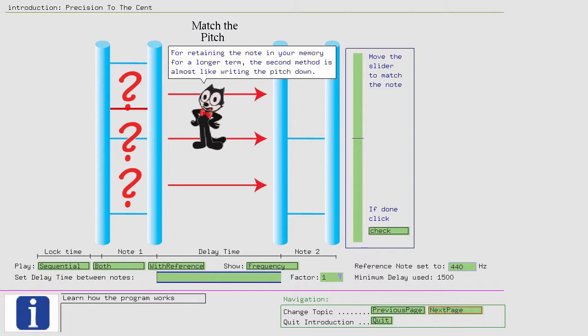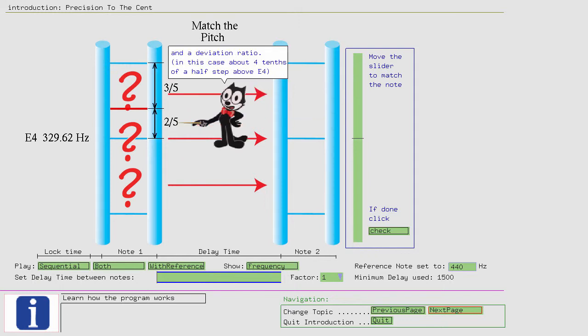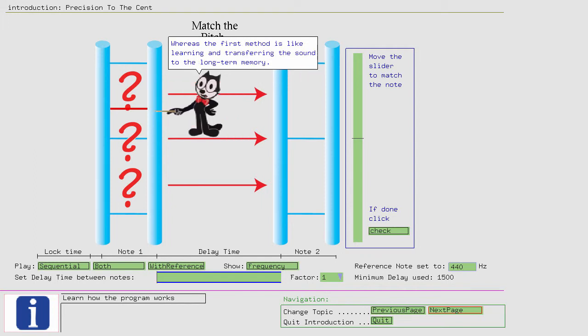For retaining the note in your memory for a longer term, the second method is almost like writing the pitch down. In other words, you are abstracting the sound to a well-known pitch, in this case E4, and a deviation ratio, in this case about four-tenths of a half step above E4. Whereas the first method is like learning and transferring the sound to the long-term memory.